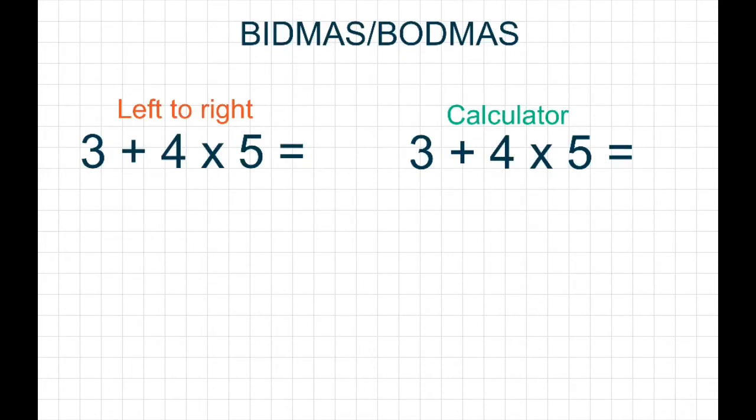So how does BODMAS and BIDMAS work? If I was to answer this first sum here, from left to right, it would work a bit like this: 3 add 4 equals 7, 7 times by 5 equals 35. Now, unfortunately, that answer is wrong.